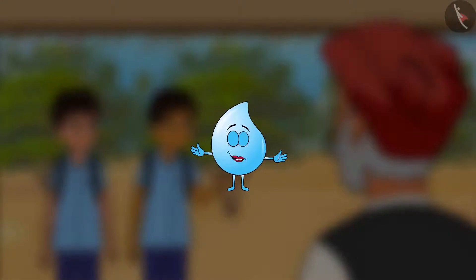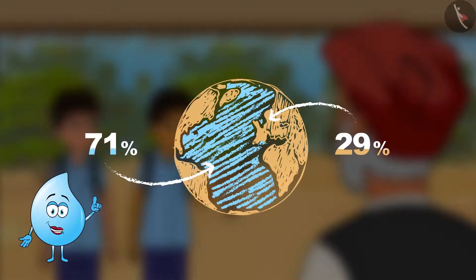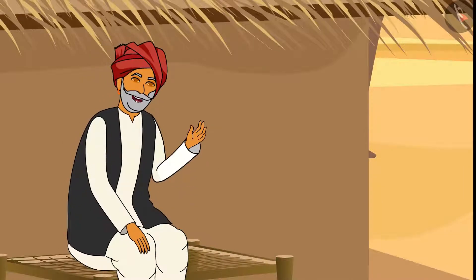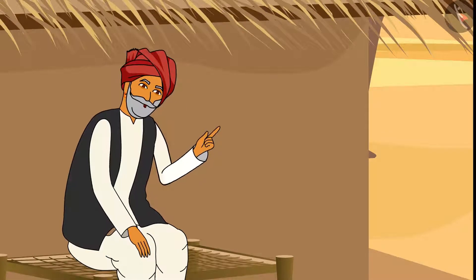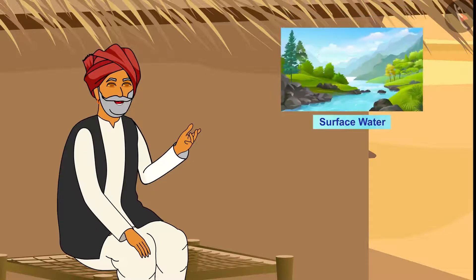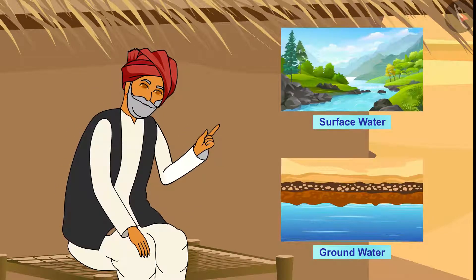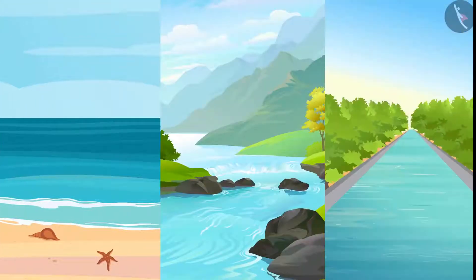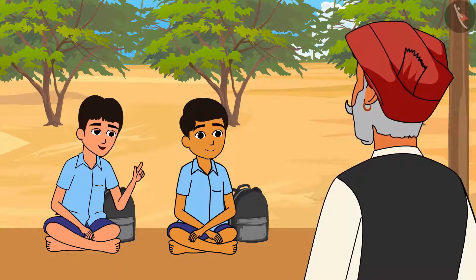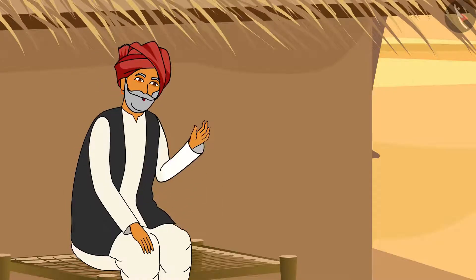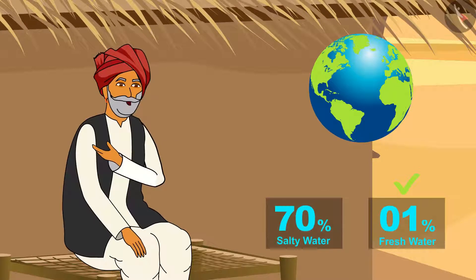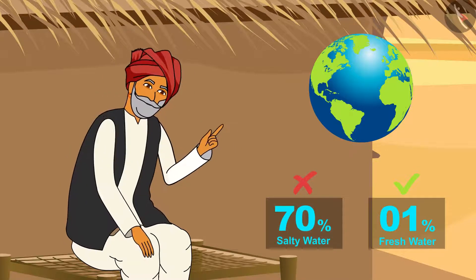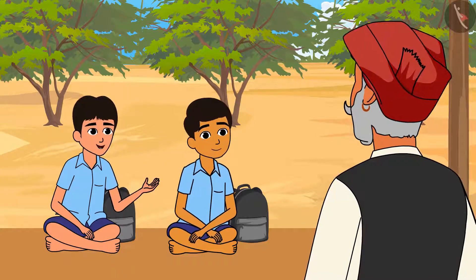Children, do you know the answer to this question — if 71% of the Earth's surface is covered with water, then why is there scarcity of water? This information is absolutely correct. There is an unequal distribution of water on Earth. Water on Earth is found as surface water and groundwater. Surface water is found in oceans, rivers, lakes, etc. We can use it, but out of that 71%, only 1% of water is fresh — the rest is salty in nature and cannot be used. Dadaji, what is the main source of fresh water?